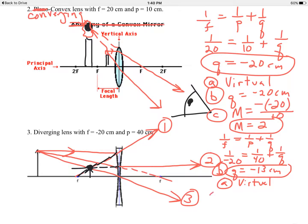And part C, what's the magnification? The magnification will be negative, negative 13 divided by the object distance, which is 40. So M turns out to be 0.33. The image is one-third the size of the object.